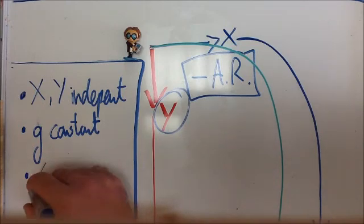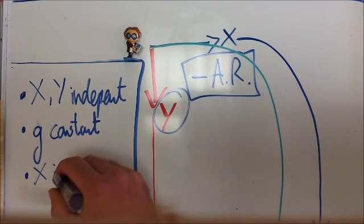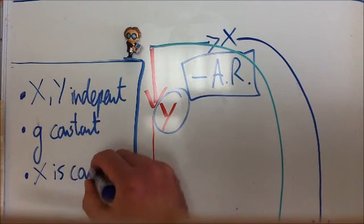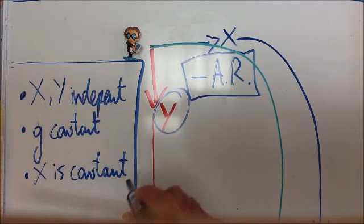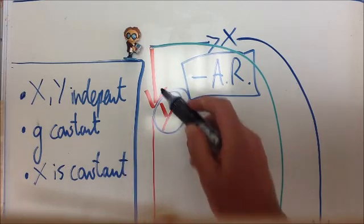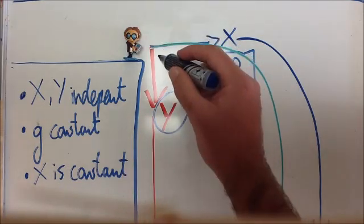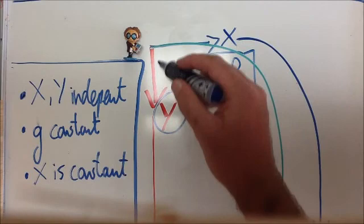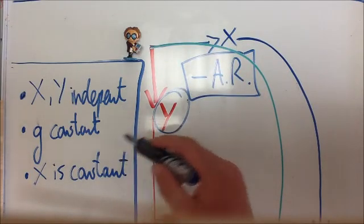we normally say that horizontal motion is constant once it's released. So fundamentals here, horizontal and vertical motions are independent. They do not affect each other.